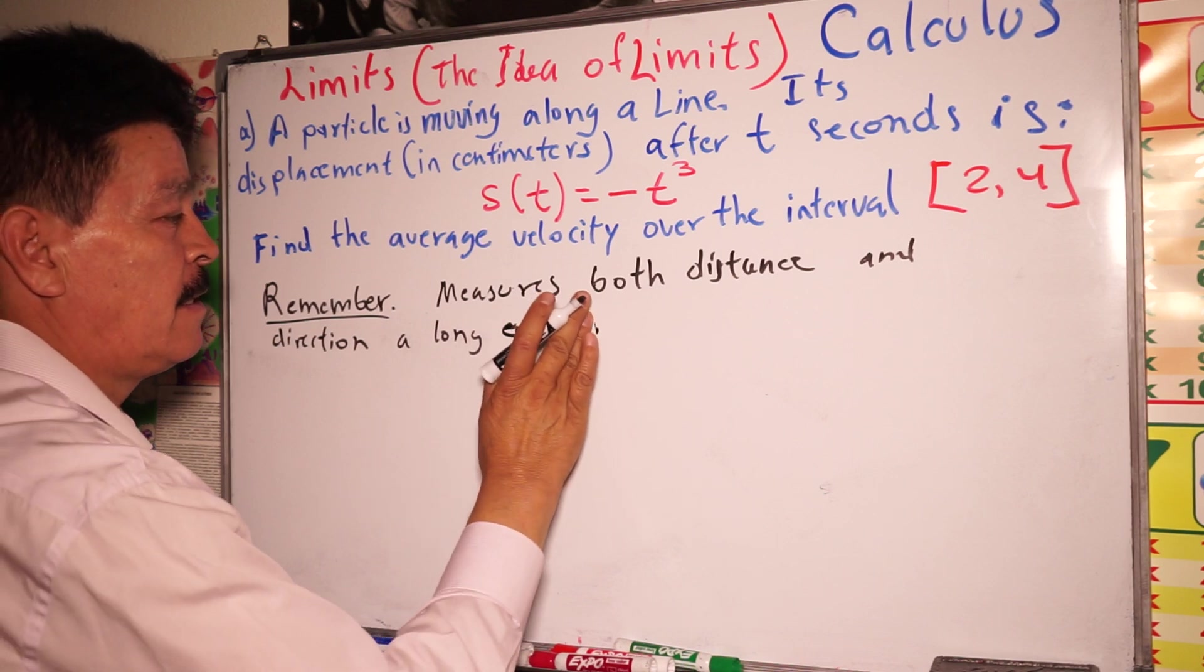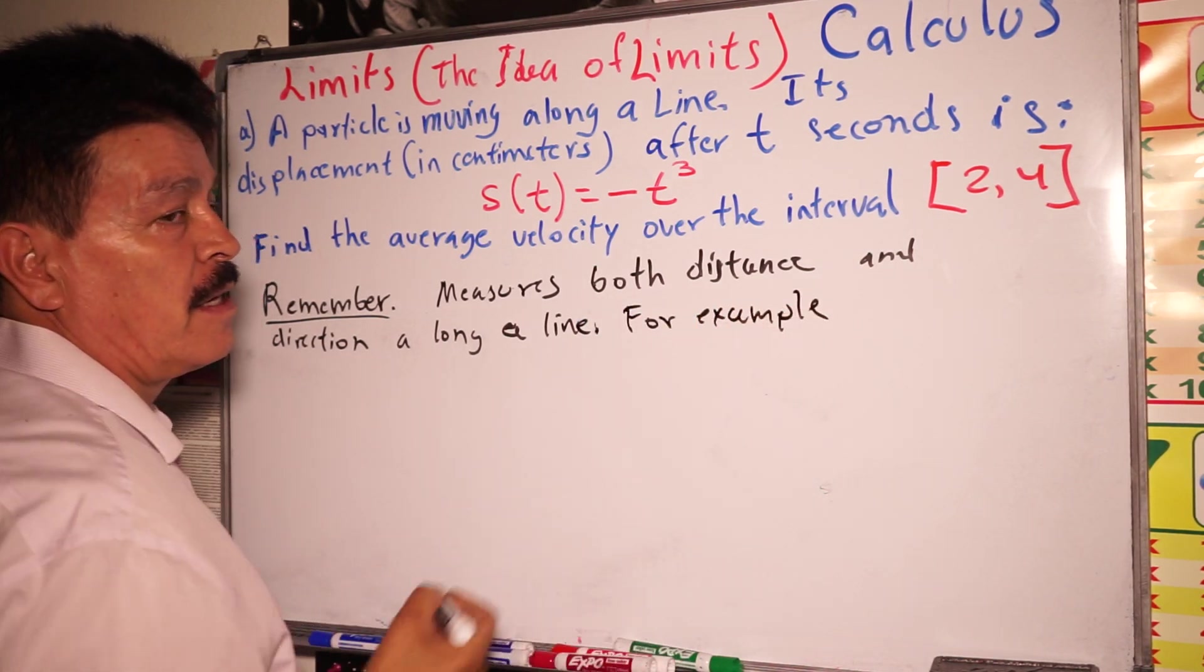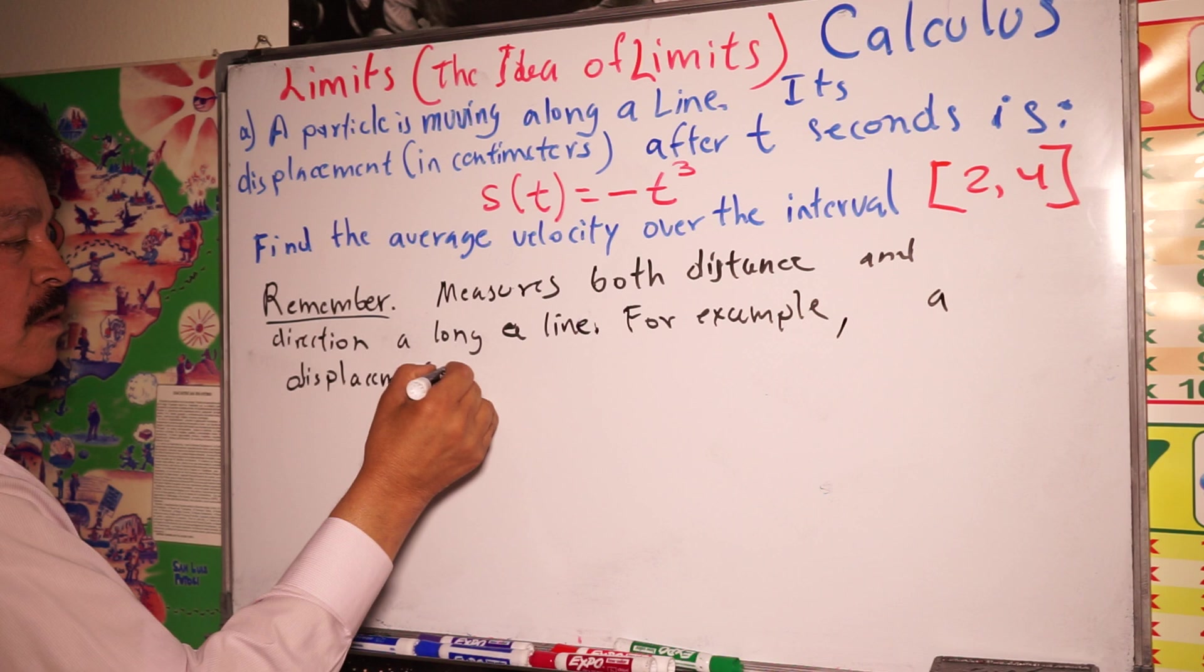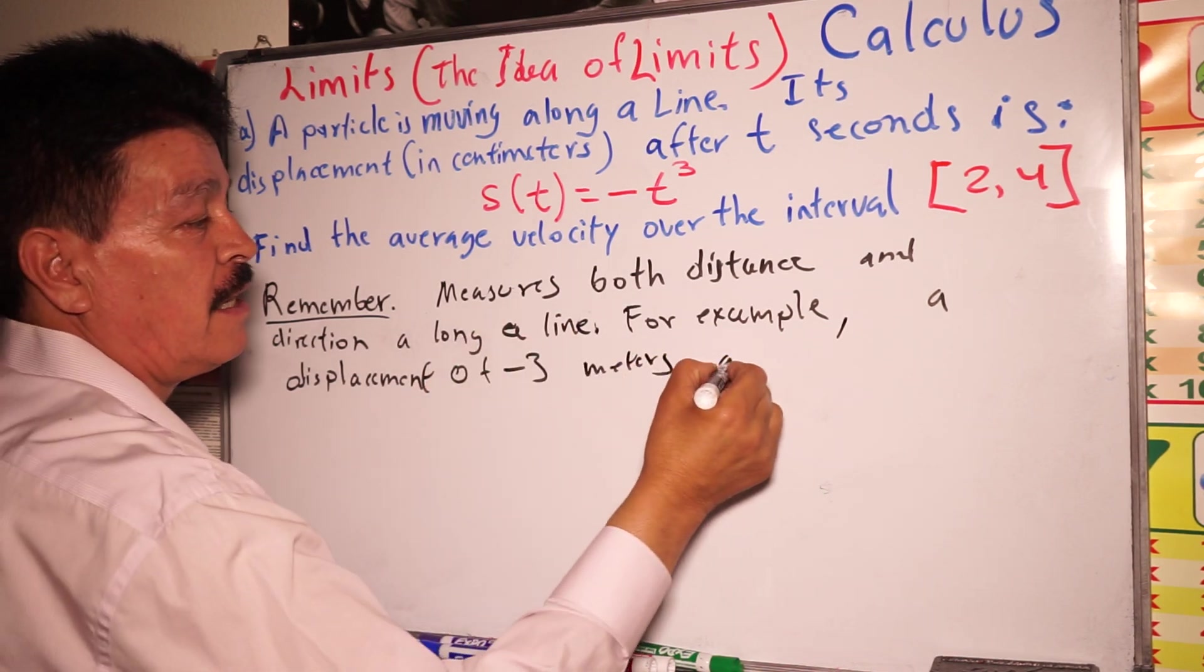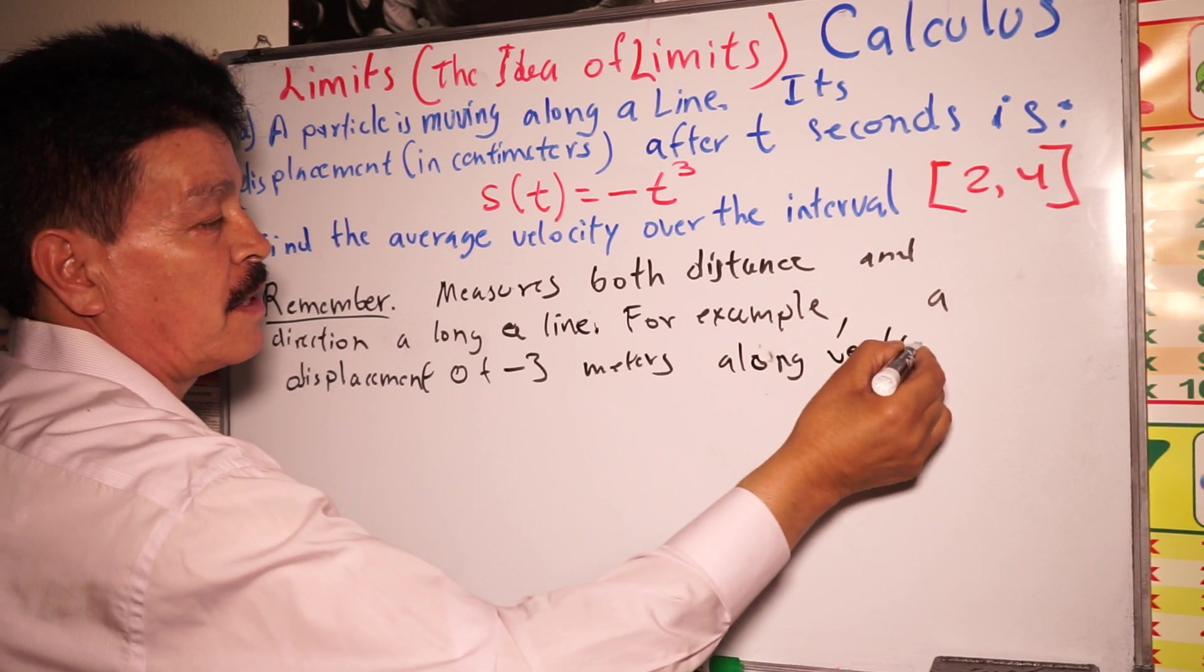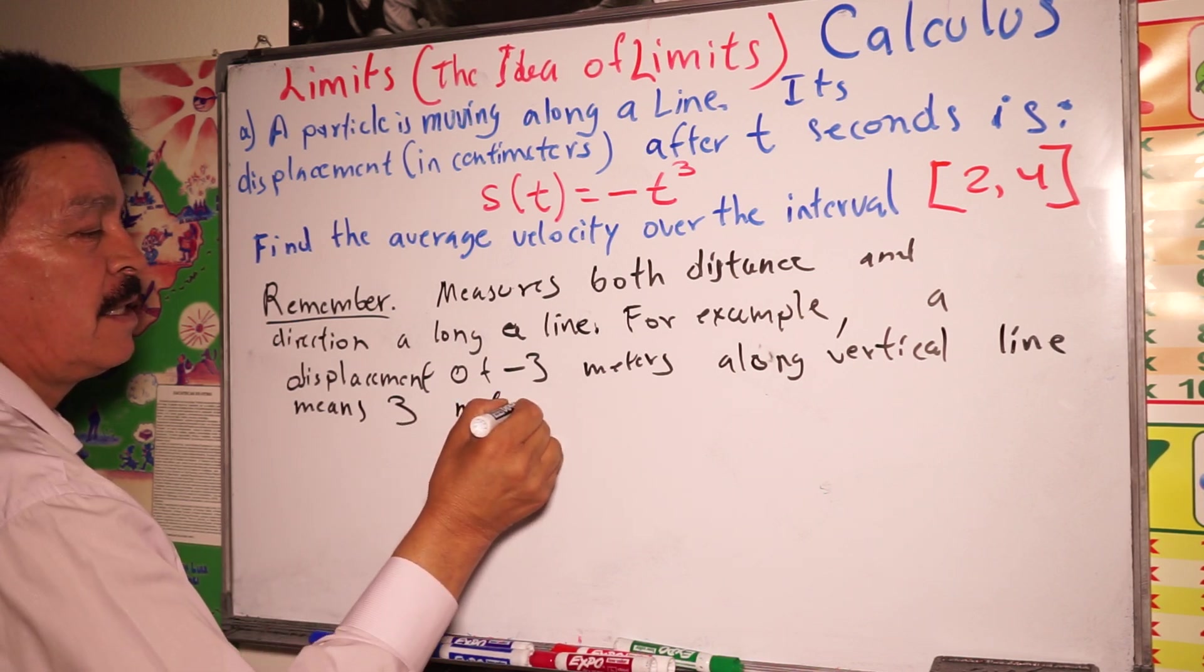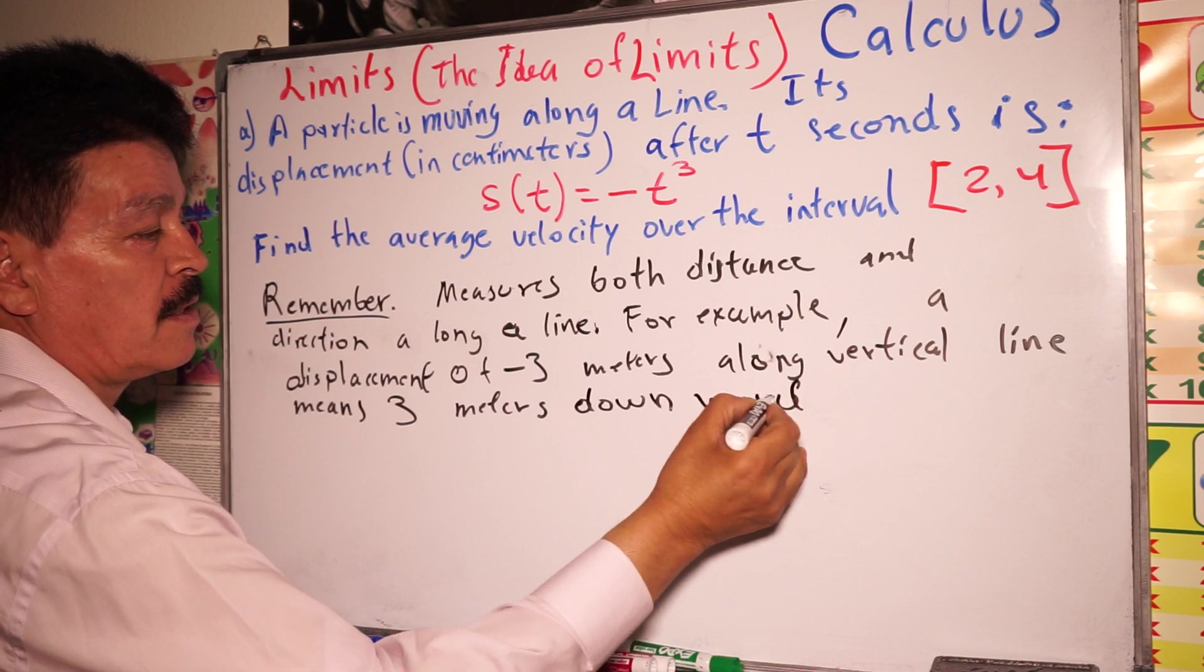For example, a displacement of negative three meters along vertical line means three meters downward.